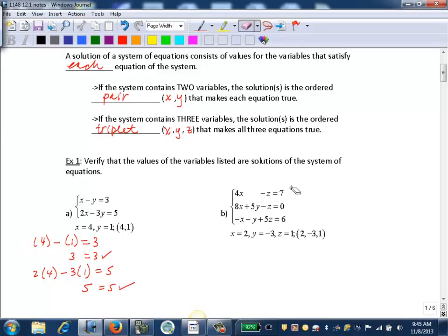Now, this might look new to us. This is a system with three variables. So here we've got x, y, and z, and we've got three equations. When you have two equations, you've got two variables with two equations, and here we've got three equations and three variables. So here's the solution we're going to verify. It's an ordered triplet instead of an ordered pair. So 2, negative 3, 1.